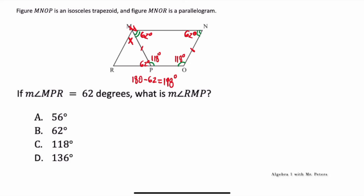Now, because this is a parallelogram, opposite angles are equal. If the angle by N is 62 degrees, then where R is, that is also 62 degrees. So there are two ways to solve this. We could say that 118 minus 62 equals X — because opposite angles M and O should be the same in a parallelogram. Once I subtract, I know that 56 is equal to X. So my answer choice would be A. Or if I focus on the triangle and do 180 minus 62 minus 62 again, I would get the same exact answer. There are two different ways to solve the same problem.